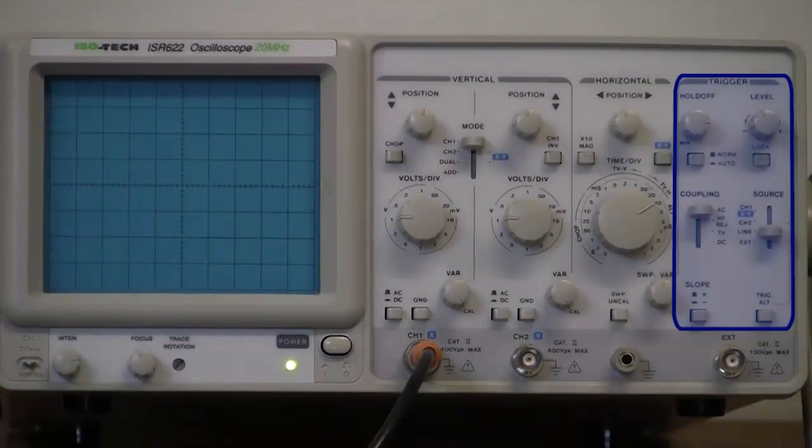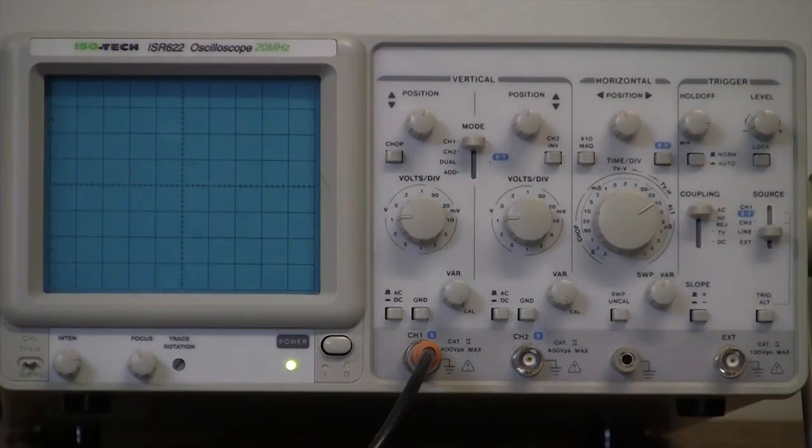The group of trigger controls on the right of the oscilloscope is used to ensure that the input signal is displayed correctly on the oscilloscope screen.